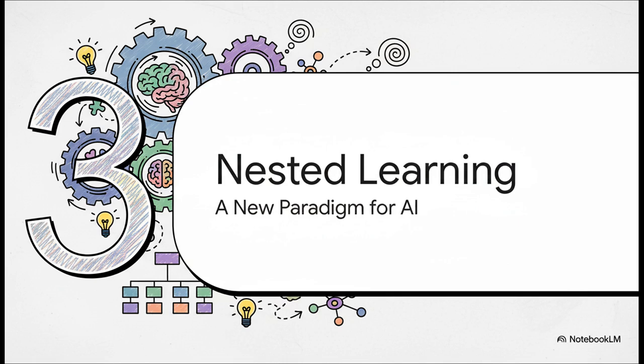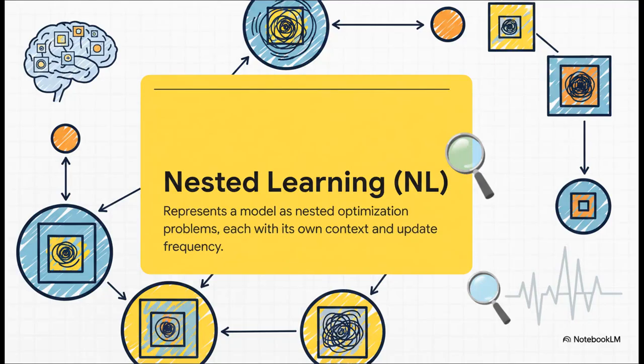Okay, so this is where the paper introduces its big idea, a totally new paradigm for AI inspired directly by how our brains are built. It's called nested learning. So what exactly is nested learning? Well, instead of thinking about one big system learning everything all at once, NL pictures a whole collection of learners nested inside each other.